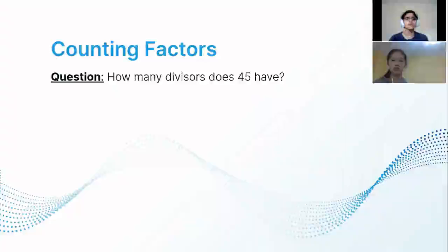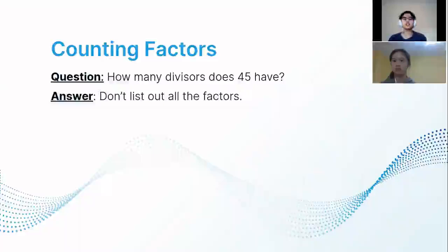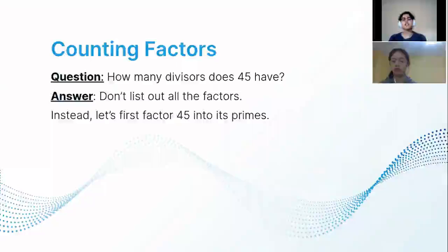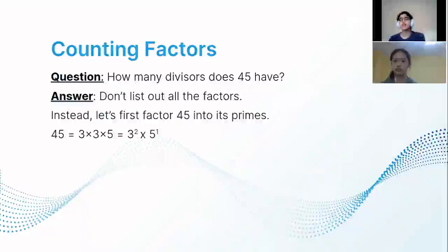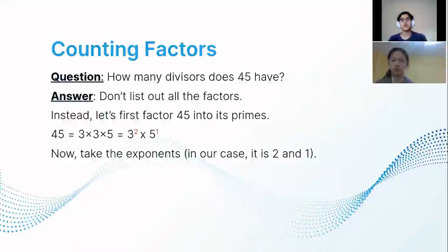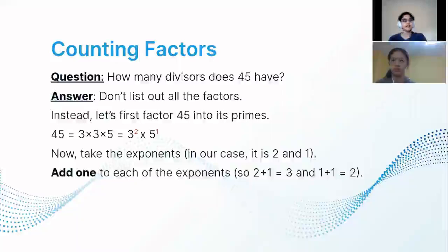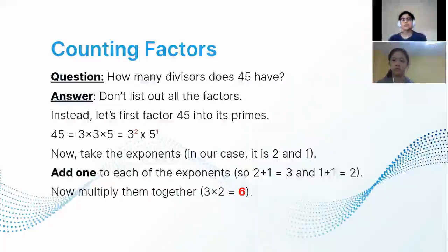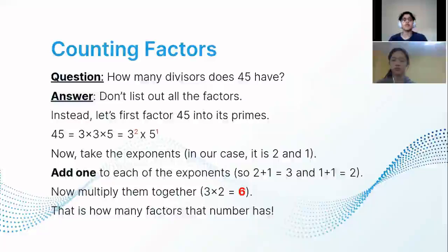How many divisors does 45 have? First, don't list out all the factors. Find the prime factorization of 45: 45 = 9 × 5 = 3 × 3 × 5 = 3² × 5¹. Now take the exponents, which are 2 and 1, and add 1 to each: we get 3 and 2. Multiply them together: 3 × 2 = 6. So 6 is the number of factors 45 has. You can list them out now and check.